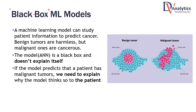For example, you have built a machine learning model that is going to predict whether a particular patient has cancer or not — whether it is a benign tumor or malignant. If it is having cancer, the model is going to give us the predicted value that there is cancer.